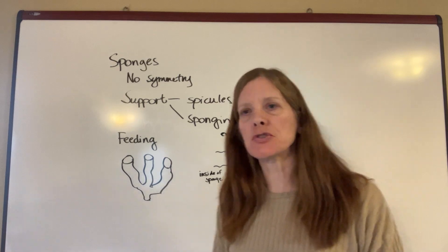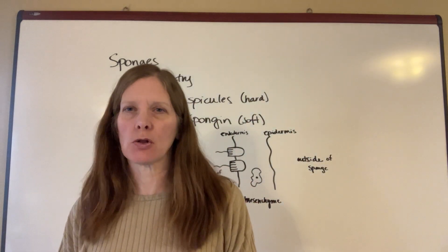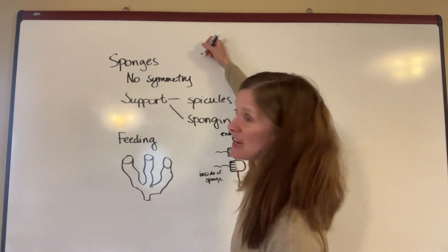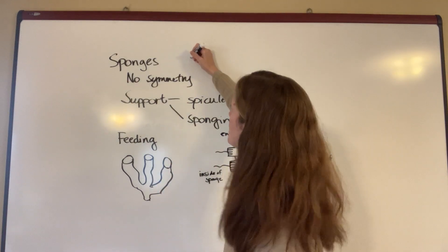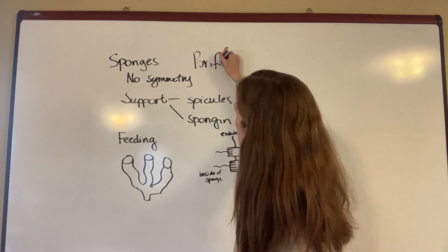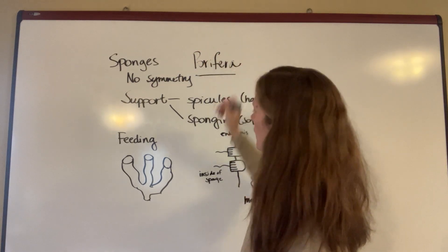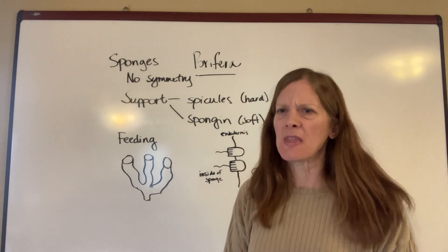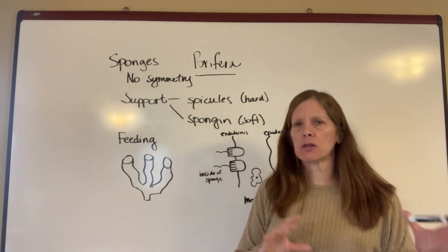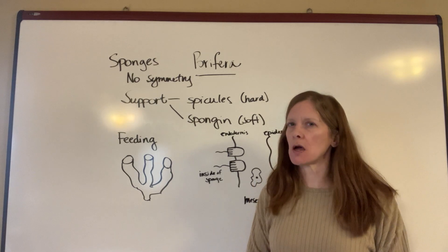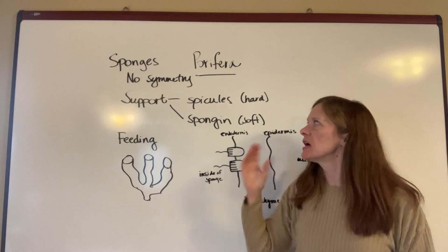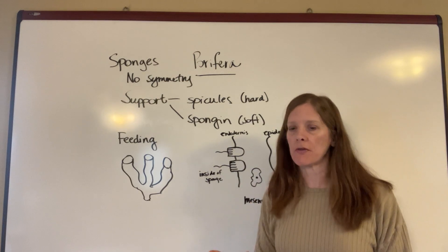You do need to make sure that you know the phylum names for each one of these phyla that we're studying. So Phylum Porifera is what the sponges are in. They do not have any symmetry — I actually mentioned that when I was talking about the different types of symmetry in these animals. Sponges don't have any symmetry at all.